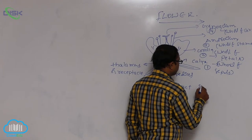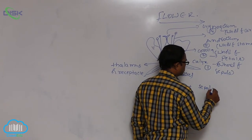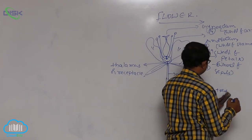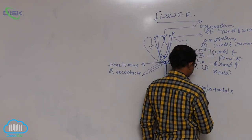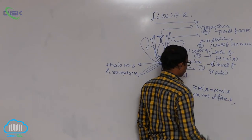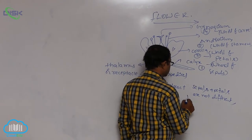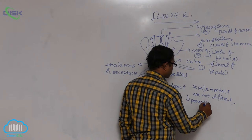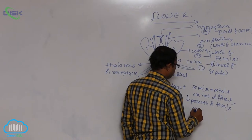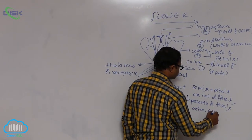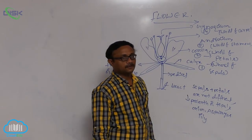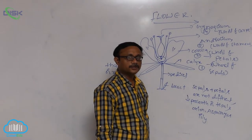In some plants, sepals and petals are not differentiated. When sepals and petals cannot be differentiated, they are known as perianth or tepals. Examples include onion, asparagus, and lily.